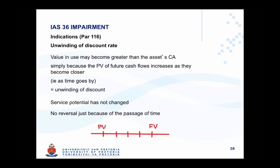To explain the phenomenon of unwinding of discount, consider the following present value calculation illustrated on the timeline. The basic functioning of a present value calculation is that you take a value in the future and discount it back to the present value. Effectively, you are eliminating the effect of interest for every time period between those two points in time.